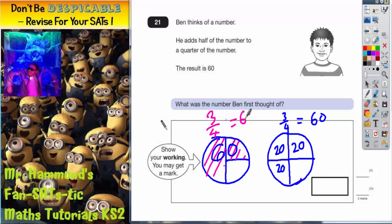So what was the number he first thought of? Well, if three quarters is 60 and each quarter is worth 20, the remaining quarter must also be worth 20. And now you can see the whole number, the number he first thought of, which must therefore have been 80.